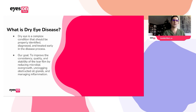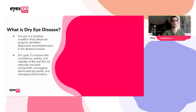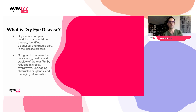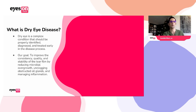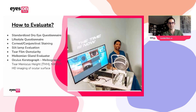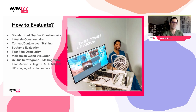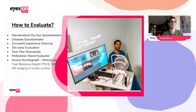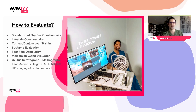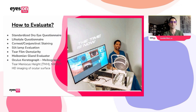So what is dry eye? Dry eye is a complex condition that should be properly identified, diagnosed, and treated early in the disease process. Our goal is to improve the consistency, quality, and stability of the tear film by reducing microbial overgrowth, unclogging obstructive oil glands, and managing inflammation. Here are some of the ways we go about our dry consultations. We use a standardized dry eye questionnaire—we prefer SPEED 2—and we also have a lifestyle questionnaire. We're big fans of fluorescein and lissamine staining on almost all of our patients, even if they're coming in for comprehensive exams.